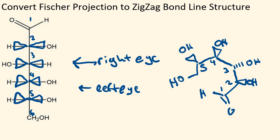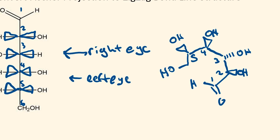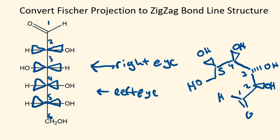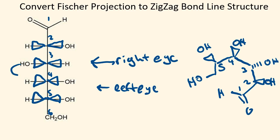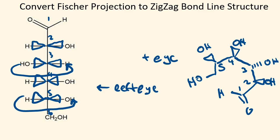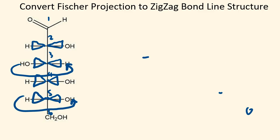Now we want to convert this into a zigzag bond line structure. The first thing we need to do is flip every other chirality center. I'm going to flip carbon three and carbon five. Now what we're going to have is a side view of this structure.